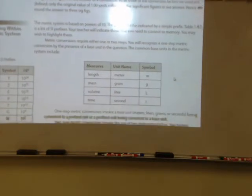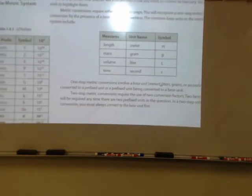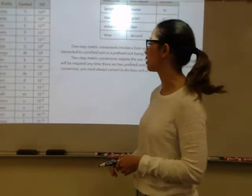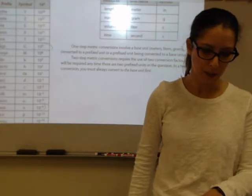Let's talk about converting within the metric system. The metric system is based on powers of 10, and we'll have either one- or two-step conversions. The base units are: meter for length, gram for mass, liter for volume, and second for time. You have prefixes with corresponding powers of 10. Memorize from giga down to nano — you need to know the prefix, the symbol, and the corresponding power of 10.